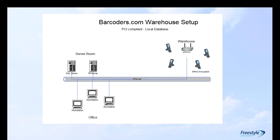The RF server also acts as the intermediary between the wireless scanners and the SQL server — the scanner calls the RF server, which then speaks to the SQL server. Bar Coders helps provide the infrastructure in your warehouse: the access points. The number of access points needed depends on how big your warehouse is — the goal is to saturate your warehouse floor with good radio frequency (RF).